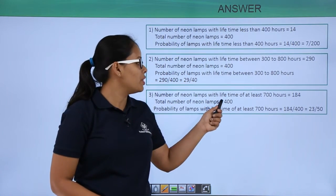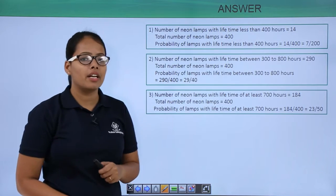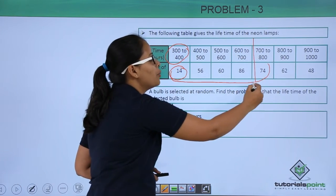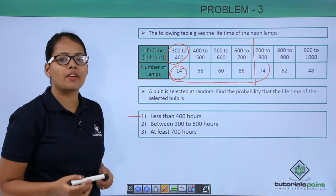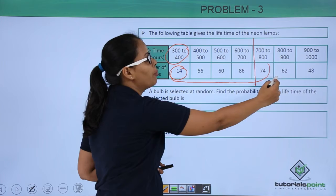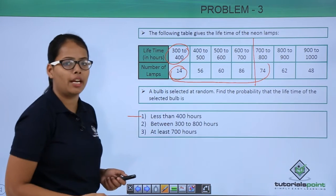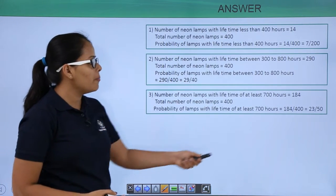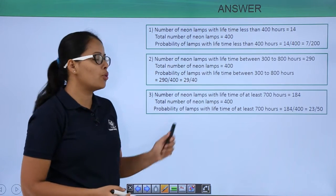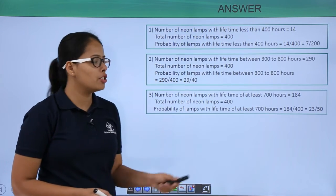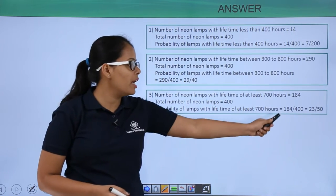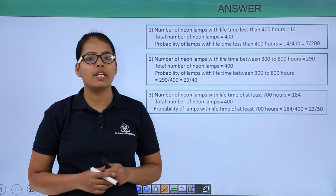For the number of neon lamps with a lifetime of at least 700 hours, you need to take the lifetime of more than 700 hours, which means 74 plus 62 plus 48. On summation you get 184, and the total number of lamps is 400. So the probability in this case will be 184 divided by 400, which gives you the ratio of 23 is to 50.